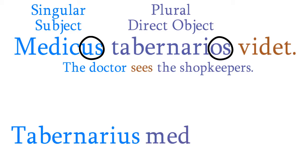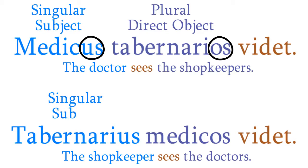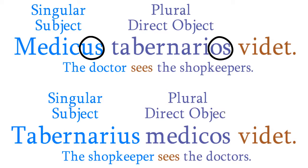Now let's switch the endings. This sentence means the shopkeeper sees the doctors. How do we know that tabernarius is a singular subject and medicos a plural direct object? Simple. The us ending is for a singular subject, while the os ending is for a plural direct object.